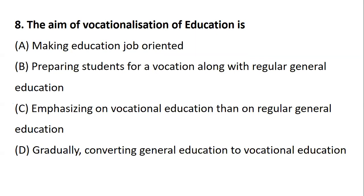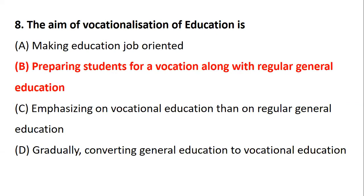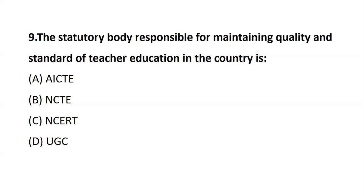Question eight: what is the aim of vocationalization of education? Those who attended yesterday's session already covered this — we studied the integration and vocationalization in detail. The options are: making job-oriented education, preparing students for a vocation, emphasizing on vocational education, or gradually converting general education to vocational education. Vocationalization of education is about preparing students for a vocation along with general education — equipping them with job-ready skills alongside their regular studies, making them market-ready.